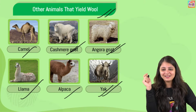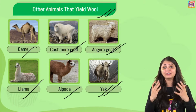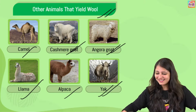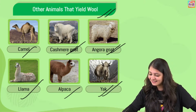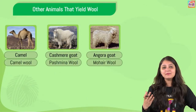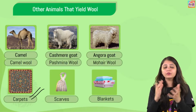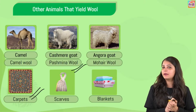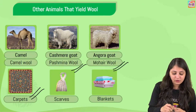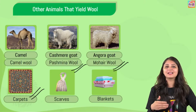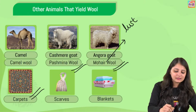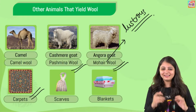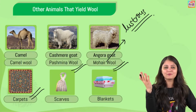So you remember there are so many animals that give us wool. Camel gives us camel wool and a lot of beautiful carpets are being made out of it. Cashmere goat gives us pashmina wool, and scarves and shawls can be made out of it. Then angora goat gives us mohair wool - mohair means lustrous, so it's going to have some shine. You'll see a lot of blankets that have a natural shine - they might be made from mohair wool.